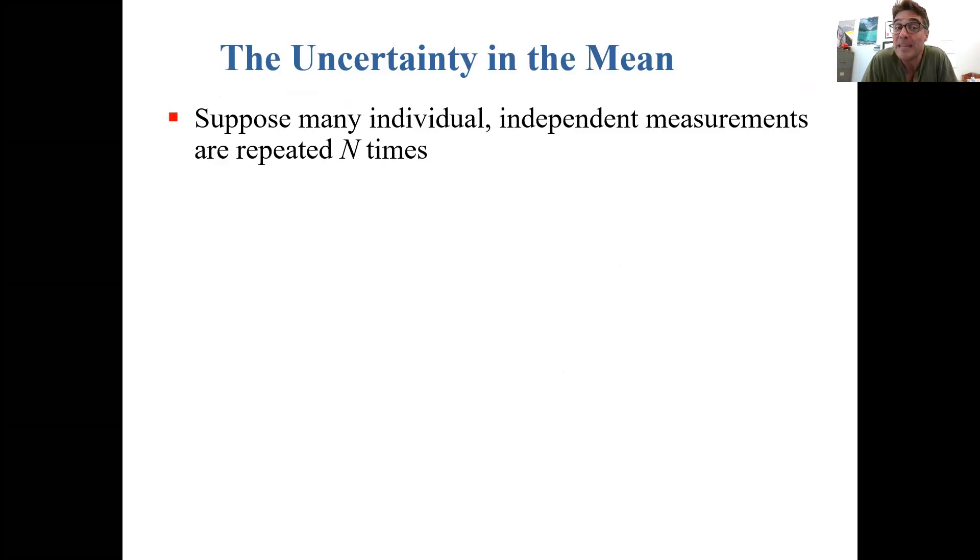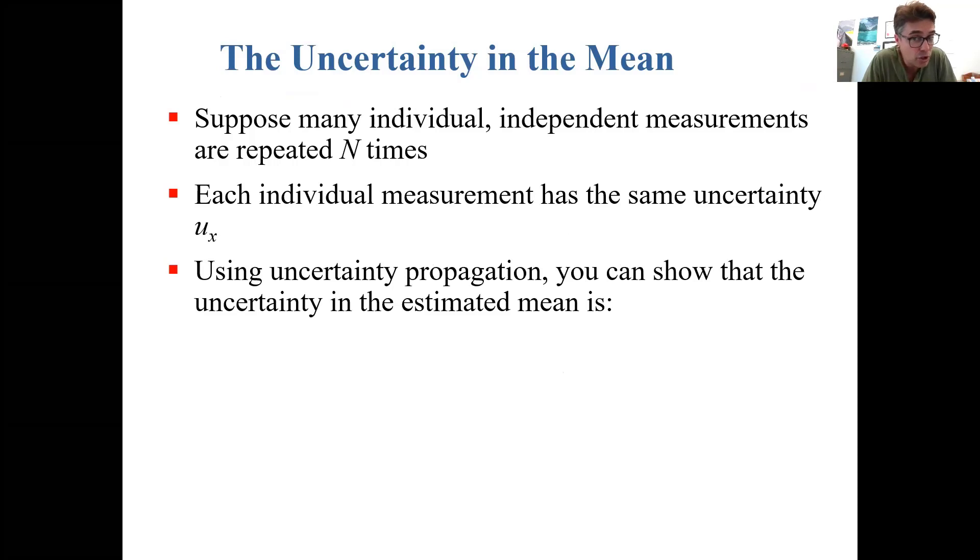Lastly, there's the uncertainty in the mean. Supposing again you have many individual independent measurements repeated n times, each individual measurement has the same uncertainty U sub x. You can show that the uncertainty in the estimated mean, the uncertainty in x bar, is equal to the uncertainty in any individual measurement divided by the square root of n.